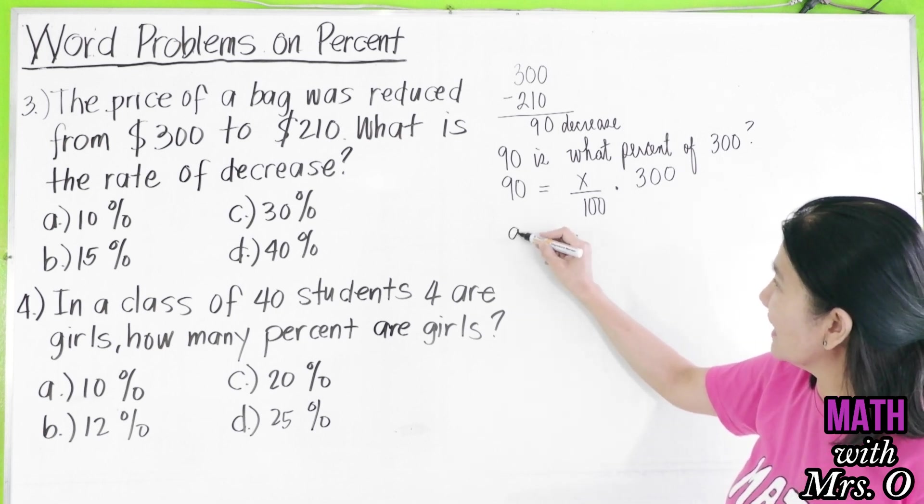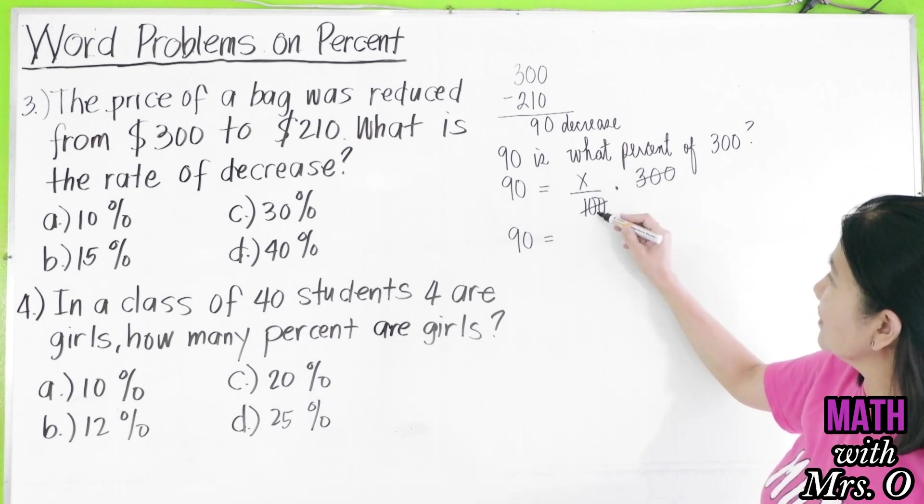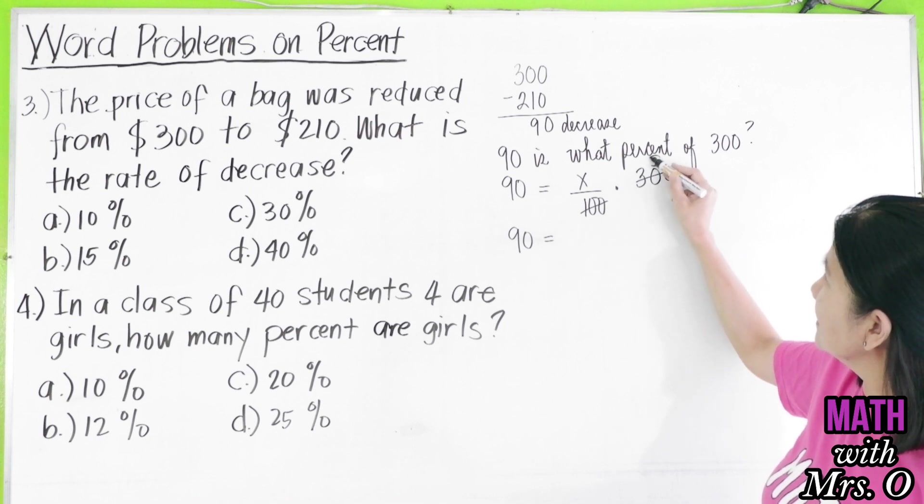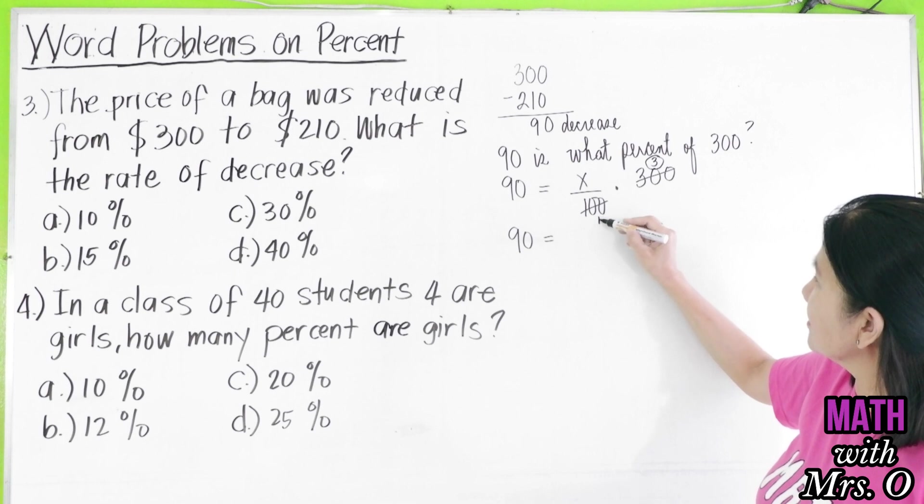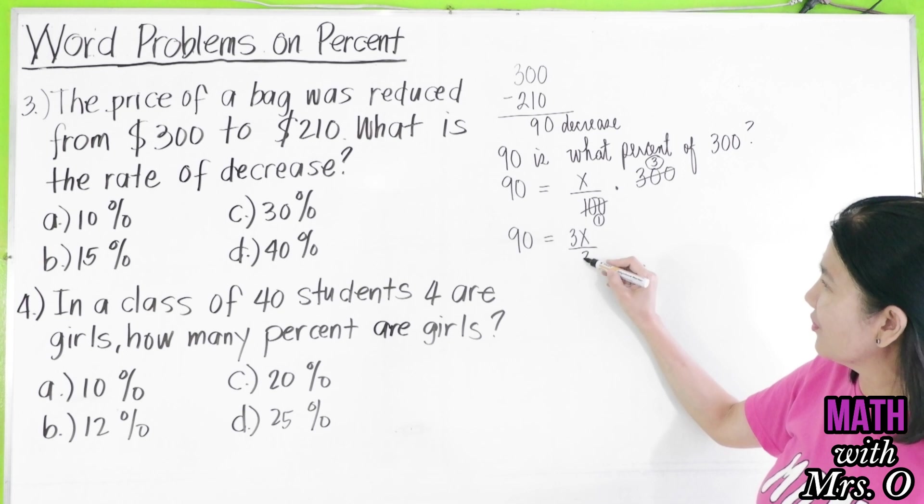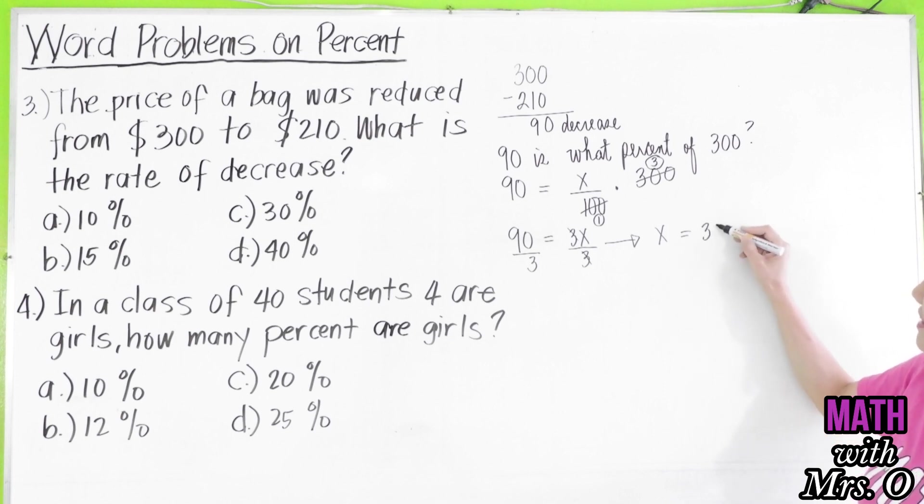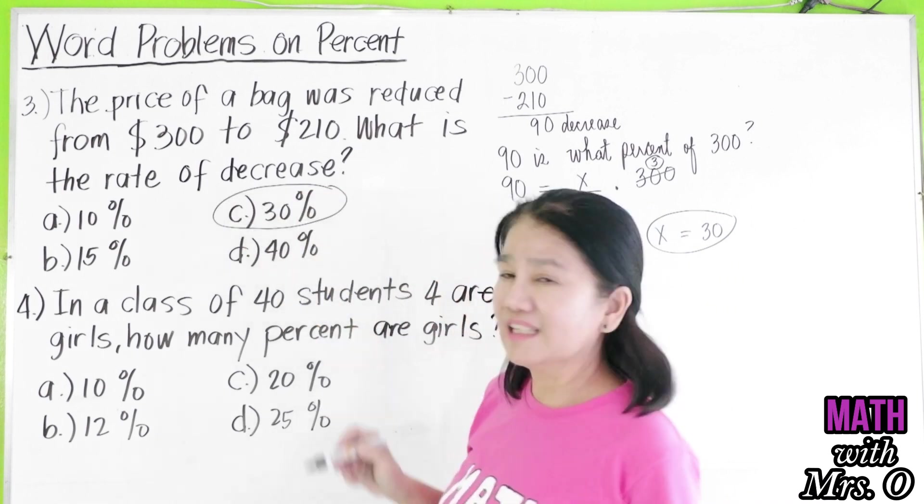So, we have here 90 equals, we can now cancel this. 300 divided by 100 is 3. This is obviously 1. So, 3 times x is 3x. Then, to leave x here alone, we divide both sides by 3. So, we get here x is equal to, cancel the 3. x is equal to 90 divided by 3 is 30. Therefore, the rate of decrease is 30%. So, our answer is letter C.